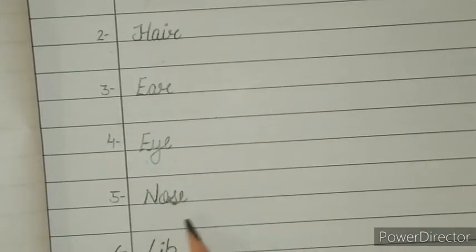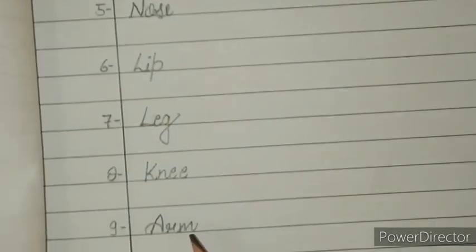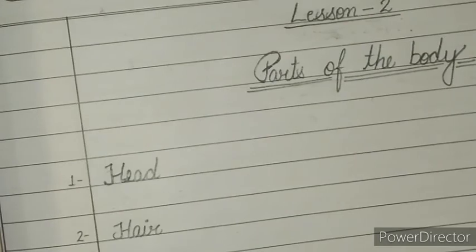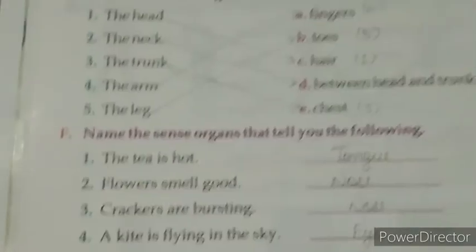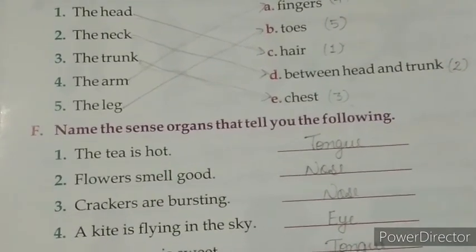Again look here — head, hair, ear, eye, nose, lip, leg, knee, arm, finger. Write exactly as shown in the notebook. Do this work in your EBS book very carefully and in good handwriting, with correct spellings, neat and clean. Understood, all of you? Complete this work. Okay, bye. Thank you. Have a nice day.